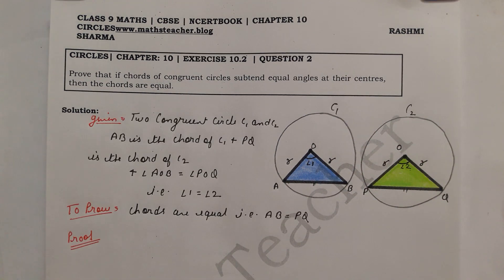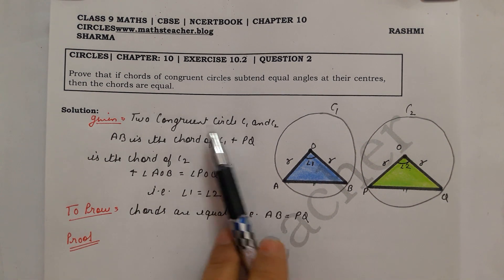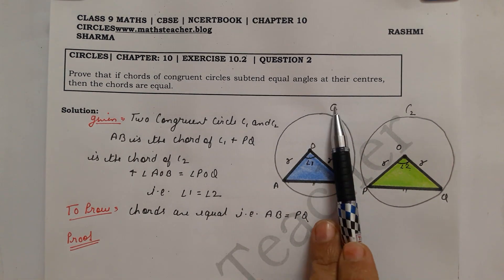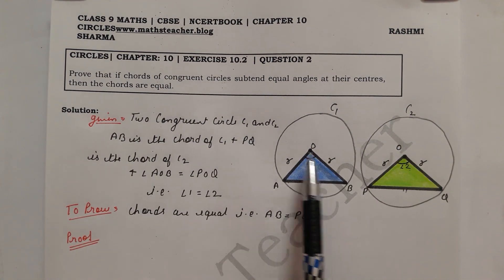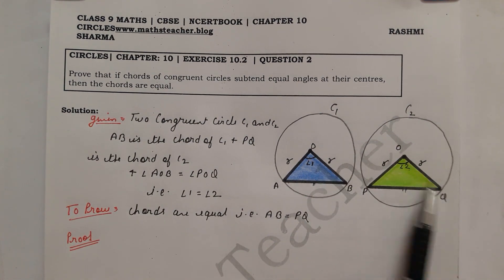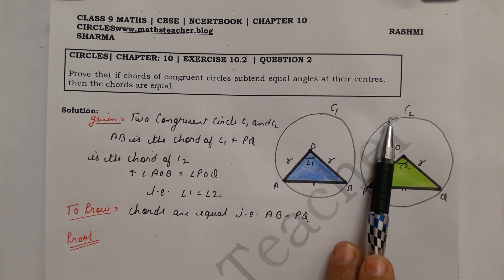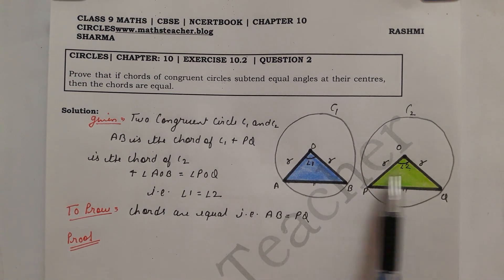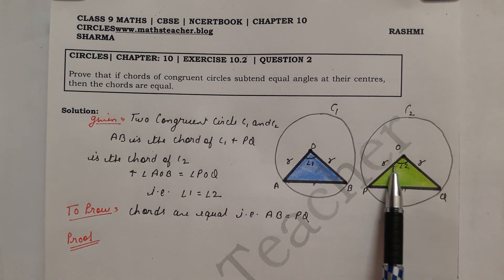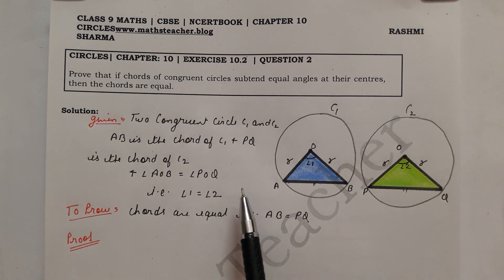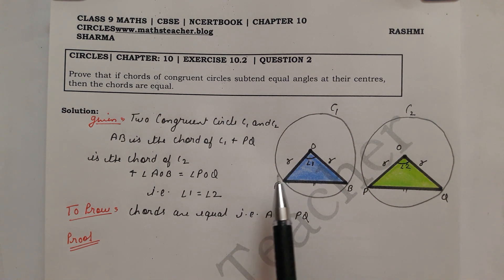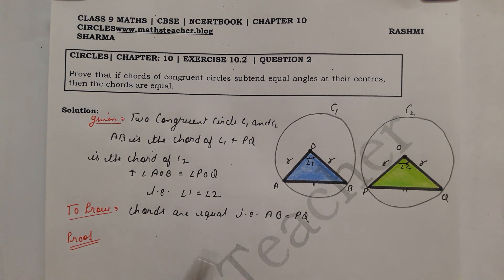First, let's write the Given. Given: two congruent circles C-1 and C-2. AB is the chord of circle C-1. PQ is the chord of circle C-2. And angle AOB equals angle POQ, that means angle 1 equals angle 2 is given. If there is a question in the exam, this is how to write it — how to attempt it and how to get full marks.